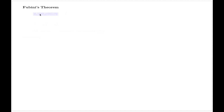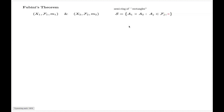It starts like this: we have two measure spaces. From these two measure spaces I can construct what is called the semi-ring of rectangles, and that is the collection of all possible direct products of elements of this σ-algebra and this σ-algebra.